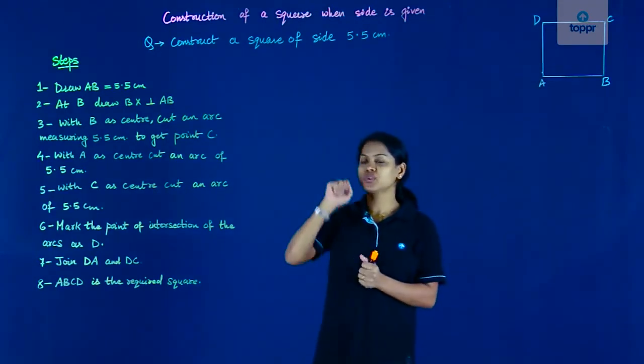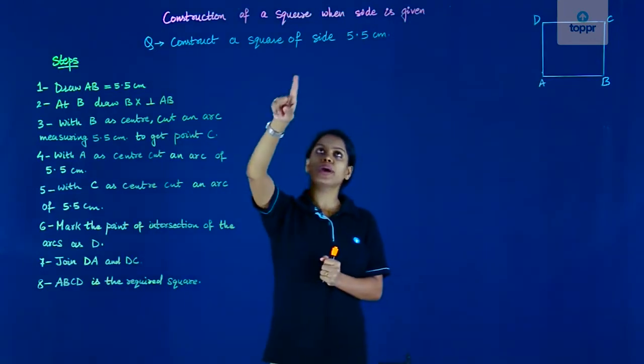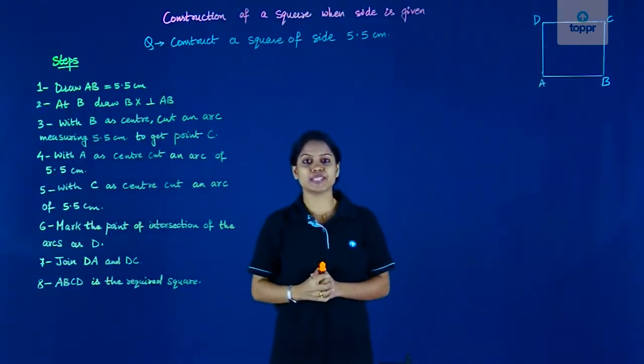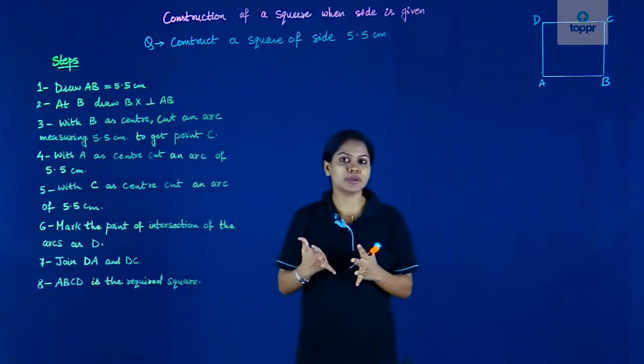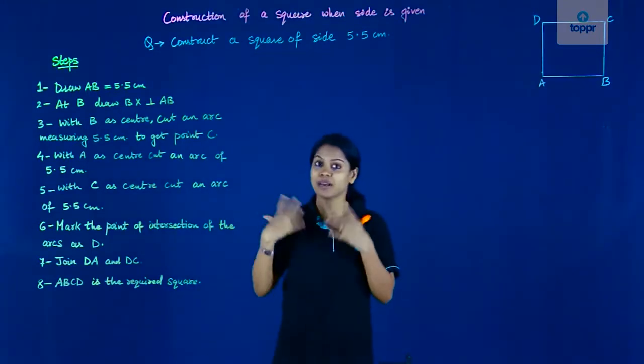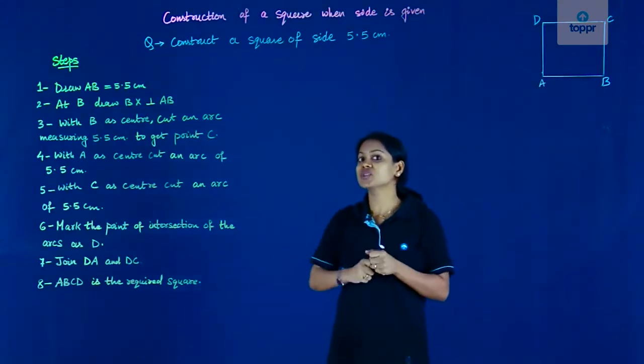For example, look at this question here. The question says construct a square of side 5.5 centimeters. Now at first glance it looks like very little information, but is it really very little information? Let's have a look again.